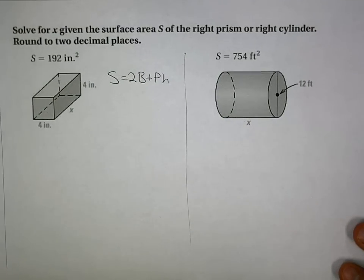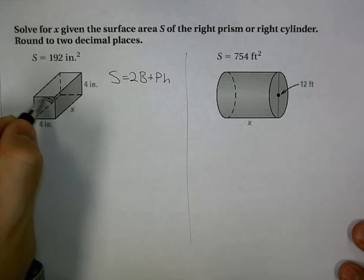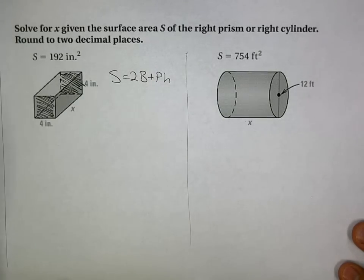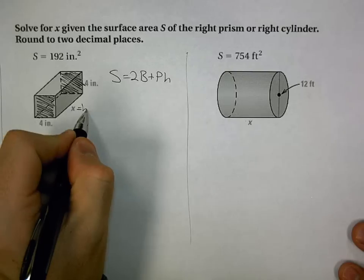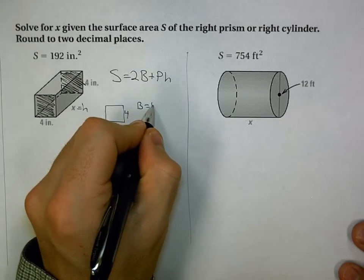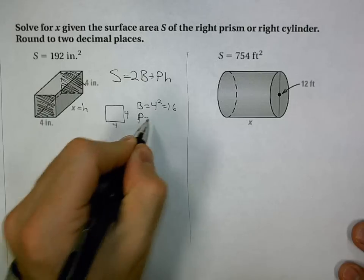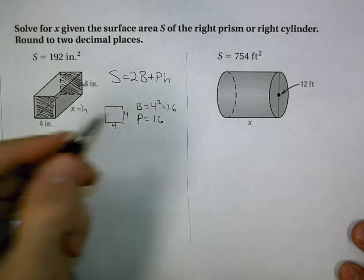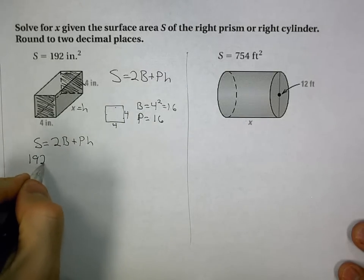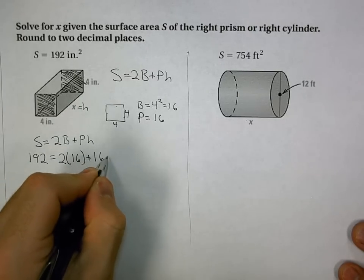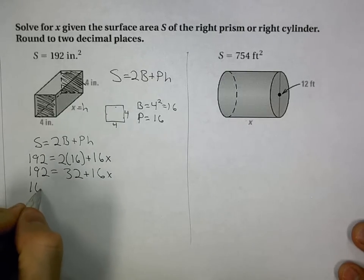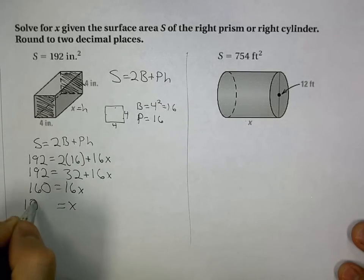Now when I solve, I have 192 equals 2 times 16 plus 16 times x. This gives 192 equals 32 plus 16x, which is 160 equals 16x, so x is 10 inches.